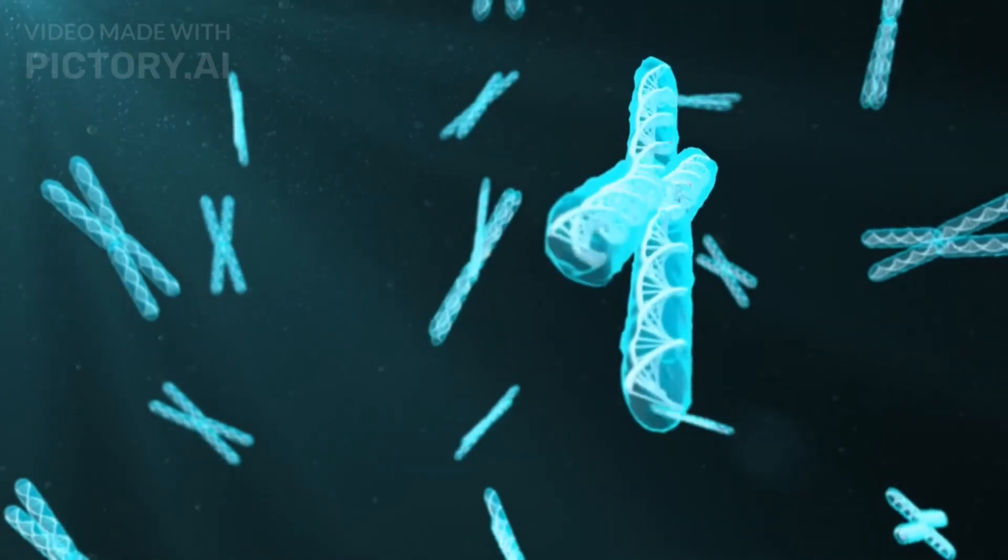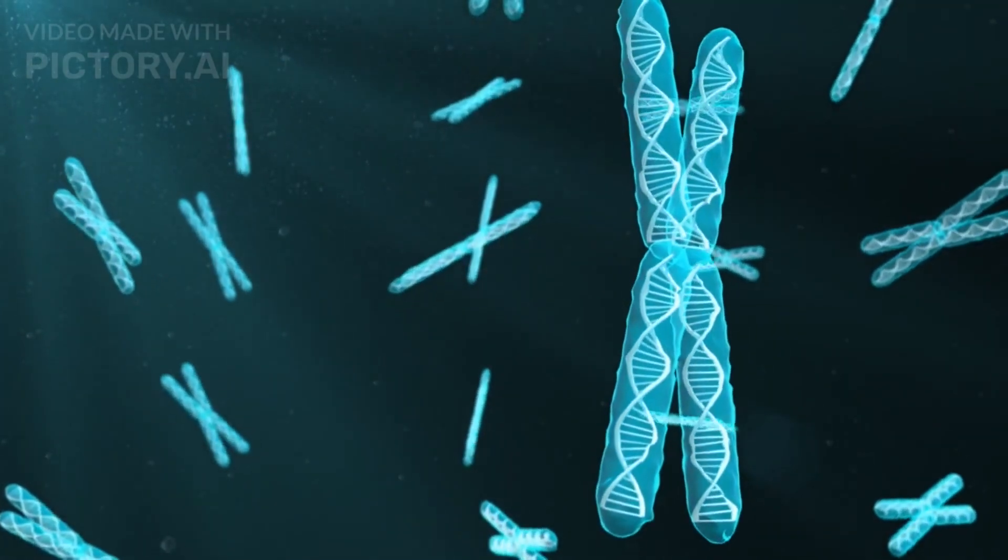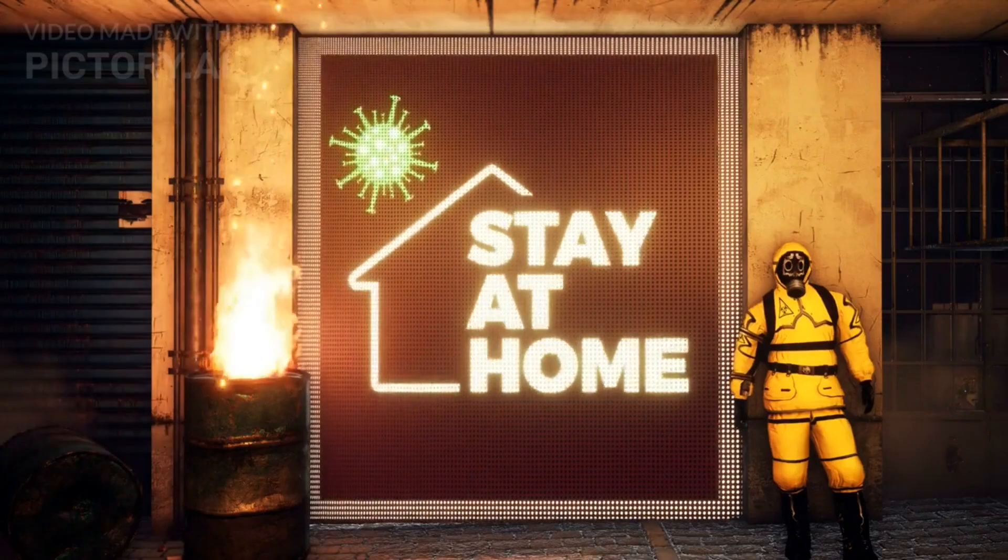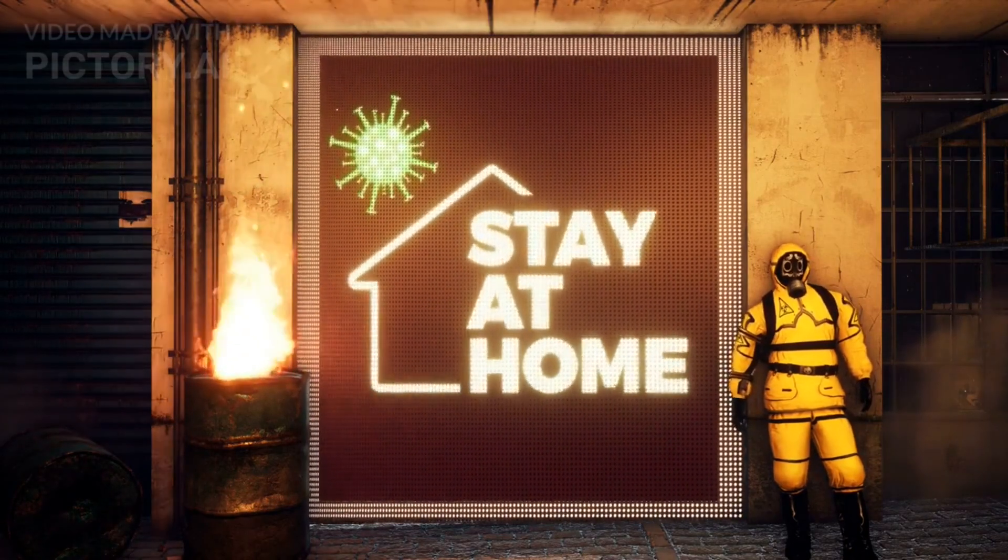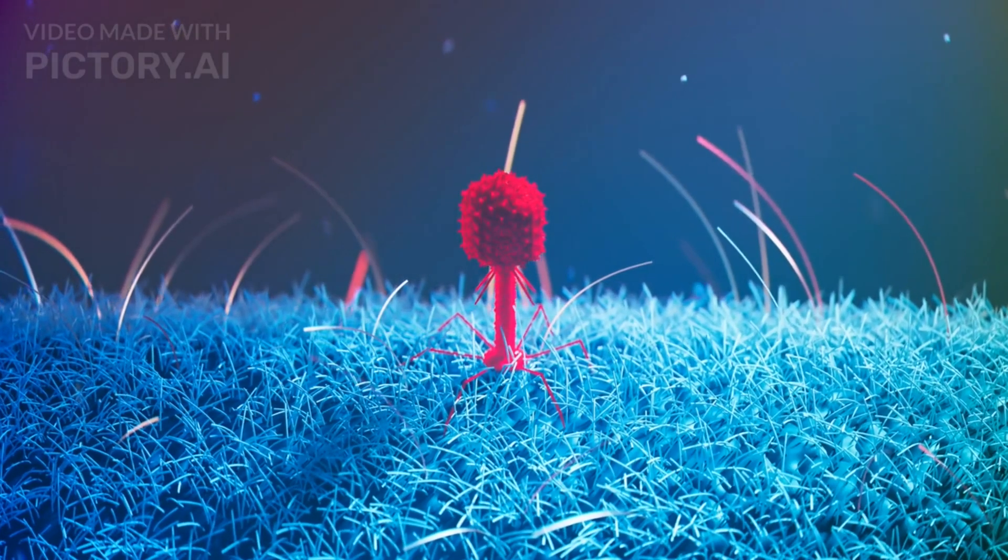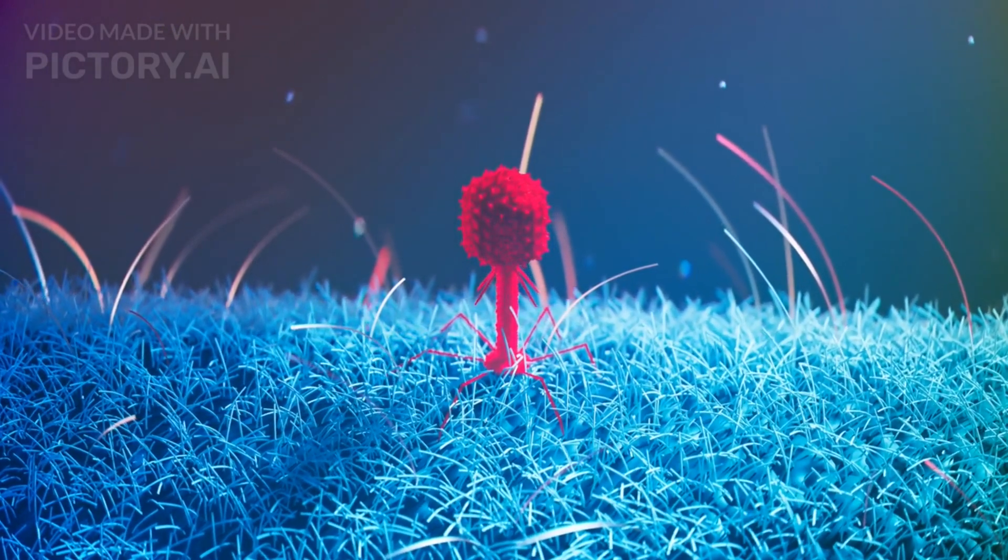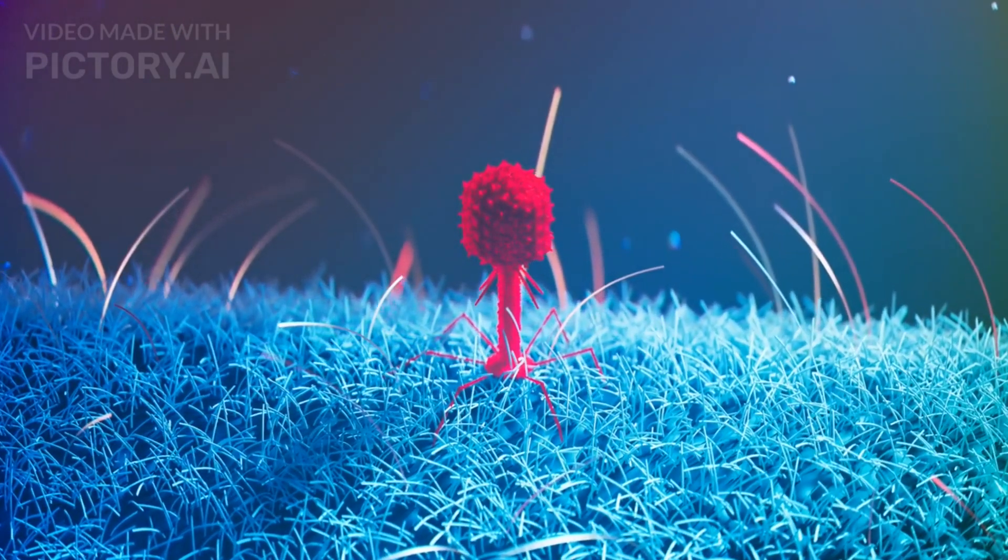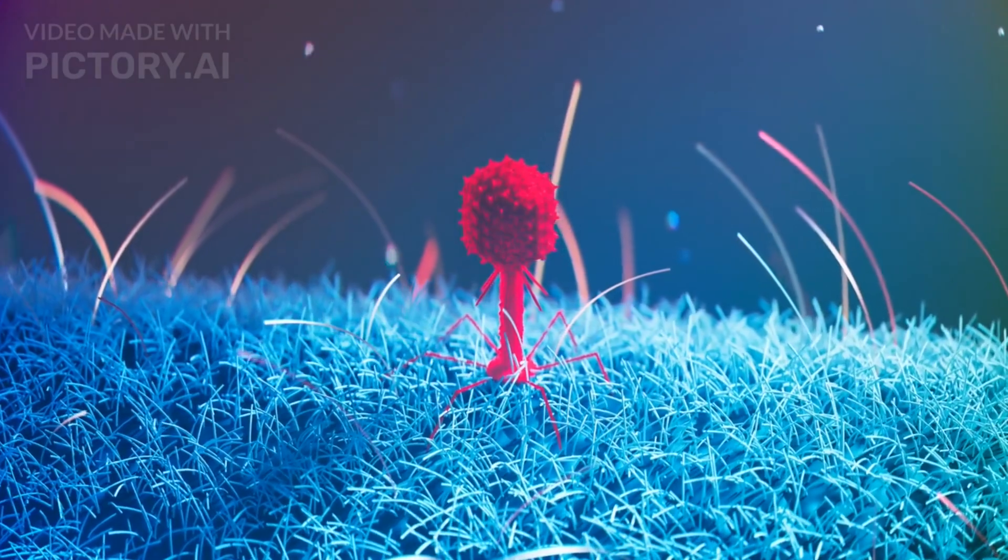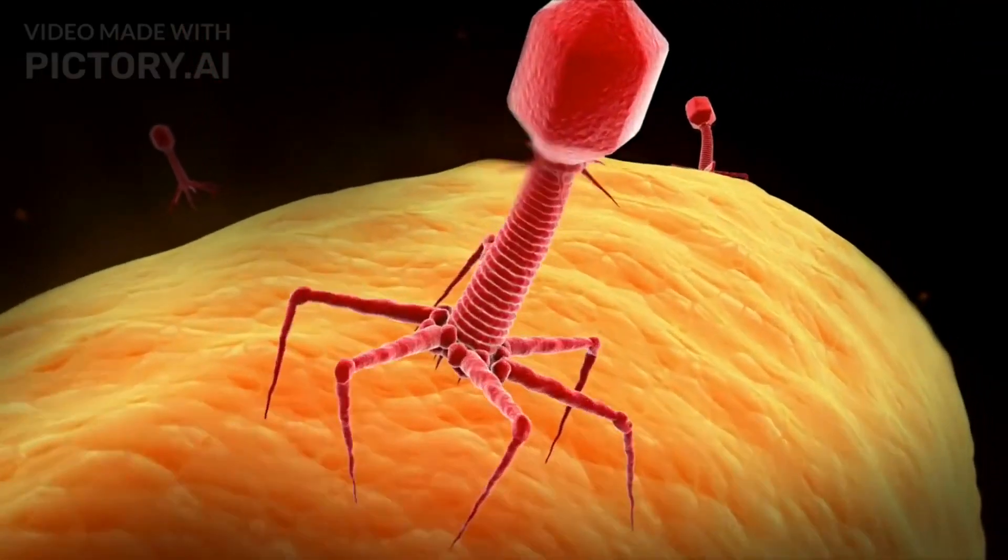The bacteriophage consists of a protein coat surrounding its genetic material. Unlike other viruses, phages have a highly specific mode of action. They attach to the surface of bacterial cells and inject their genetic material, taking over the bacterial machinery to produce more phages. This process ultimately leads to the destruction of the host bacteria.